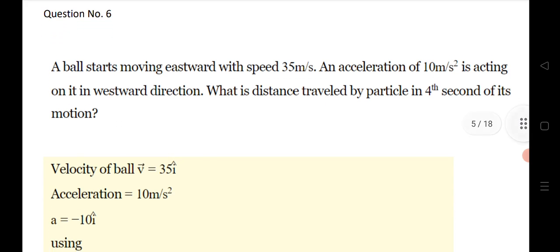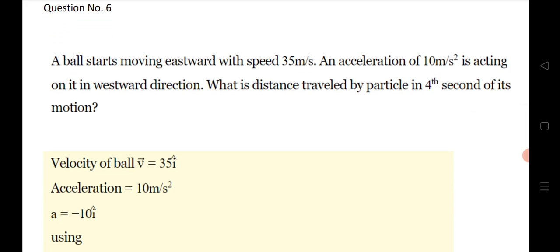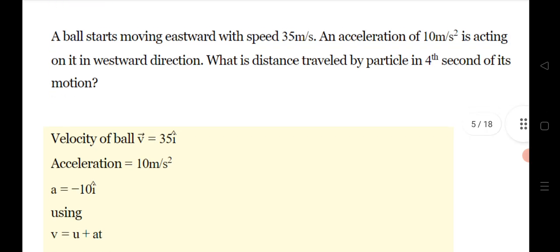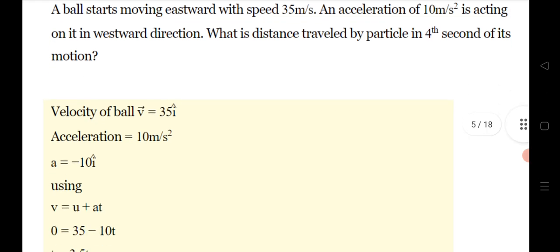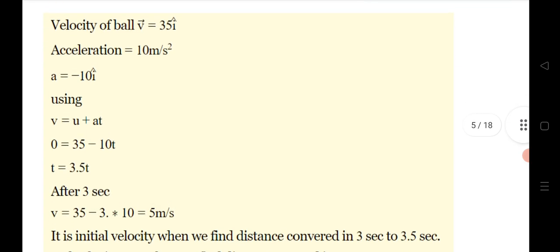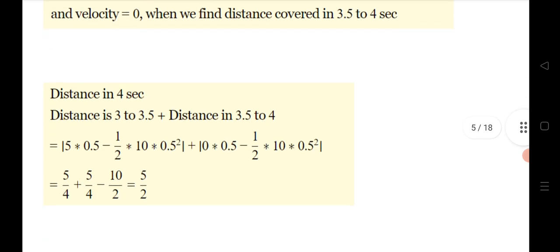Question 6: a ball starts moving eastward with a velocity of 35 m/s and an acceleration of 10 m/s² acting in the westward direction, which is opposite. Find the distance traveled by the particle in the fourth second of its motion. The solution is provided — you can take a screenshot. The answer is 5/2, that is 2.5 meters.